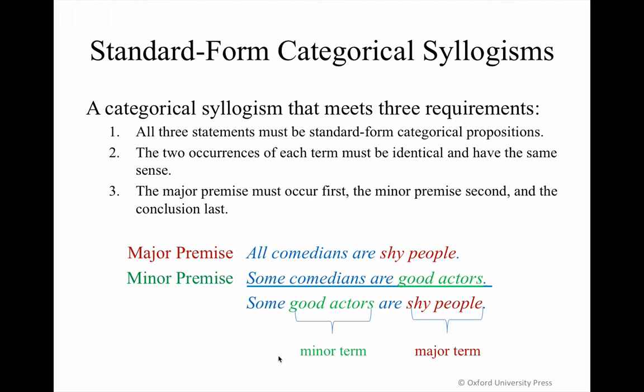All three statements need to have the relevant quantifier — either the universal 'all,' the universal 'no,' or the quantifier 'some.' You also need your statement to reflect the relevant affirmative or negative quality. So if you have a universal negative, you use the word 'no,' and if you have a particular negative, you use the quantifier 'some' and the copula 'are not.'